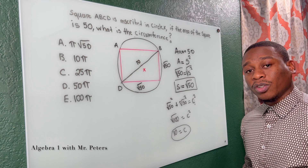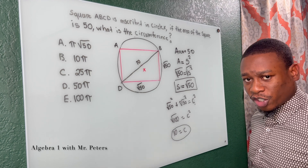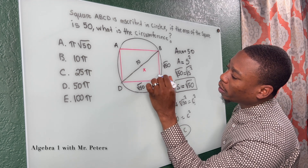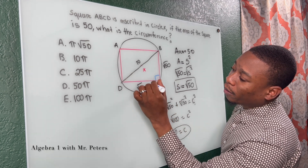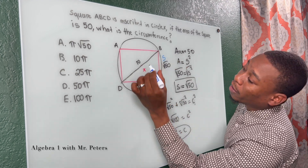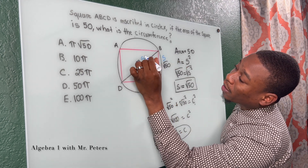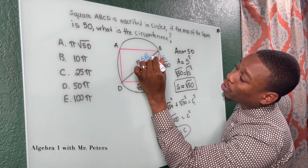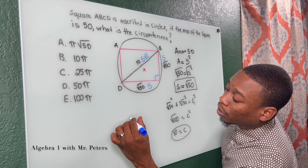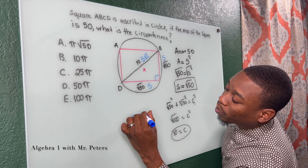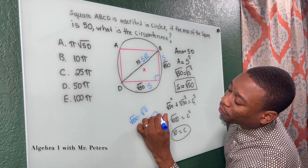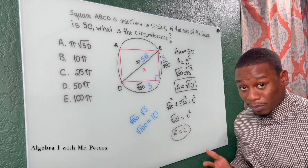Or if we understood those special triangle relationships — when we cut a square in half, each side is represented by s and the diagonal is s times radical 2. So radical 50 multiplied by radical 2 gives radical 100, which simplifies to 10. We get the same exact thing either way.